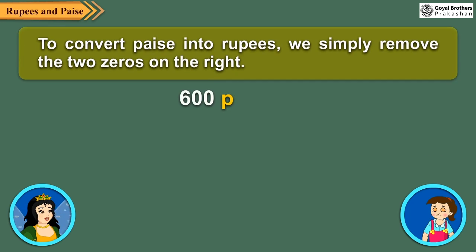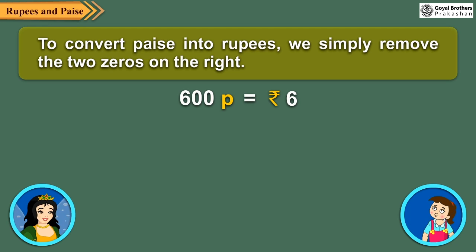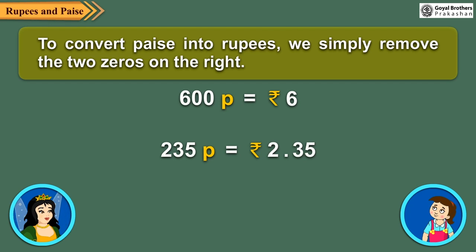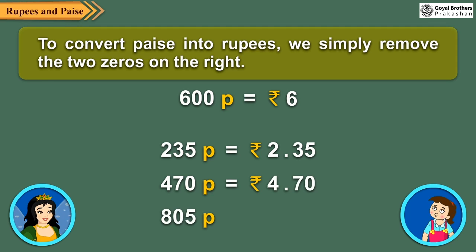For example, 600 paise will become Rs.6. What to do when paise do not have two zeros on the right? In that case, we put a dot after the second digit from the right. Consider 235 paise — here we do not have zeros on the right, so we put a dot between 2 and 3, that is two digits from the right. Similarly, 470 paise can be written as Rs.4.70 and 805 paise can be written as Rs.8.05.